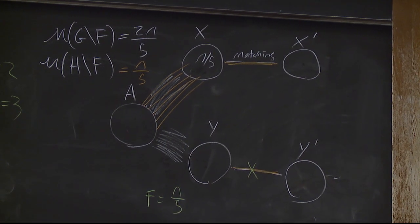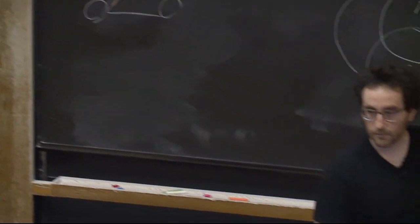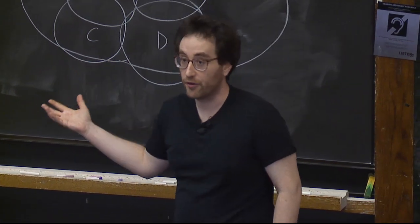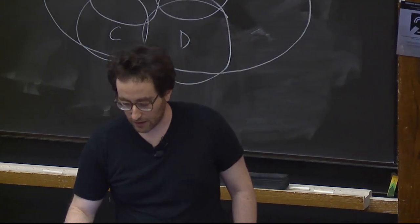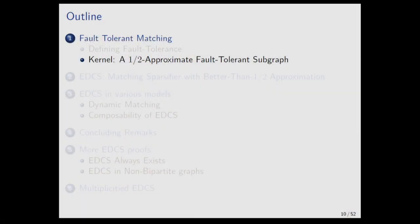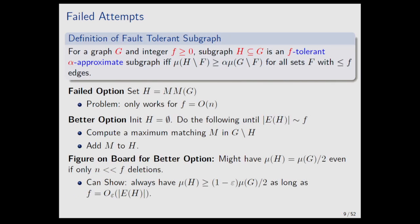So we can ask: can we do better than one-half? Before doing that, I want to show a different one-half approximation. The problem with the previous sparsifier is not just that it's one-half — it's also that it's kind of hard to work with. It doesn't have a nice clear structural definition; it's defined only via a complicated iterative algorithm. So as a warm-up: if you're willing to settle for one-half approximation, there's a very nice object that does that and is very easy to work with.